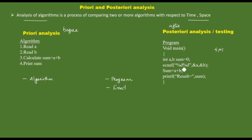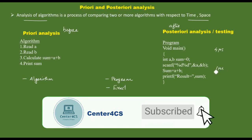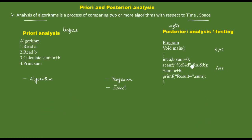For example, on a Pentium processor machine the algorithm may take 4 microseconds, but on a faster machine like an i5 or i7 it may take only 1 microsecond. So the posteriori analysis values depend on the hardware — the machine being used.